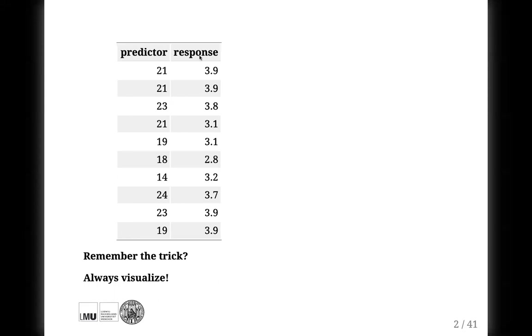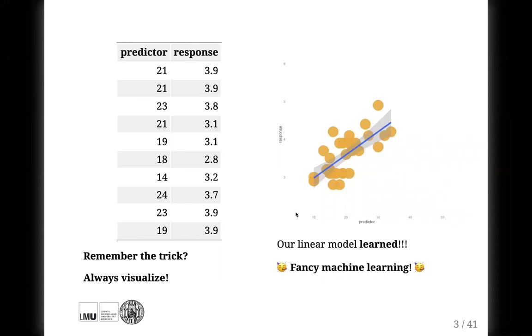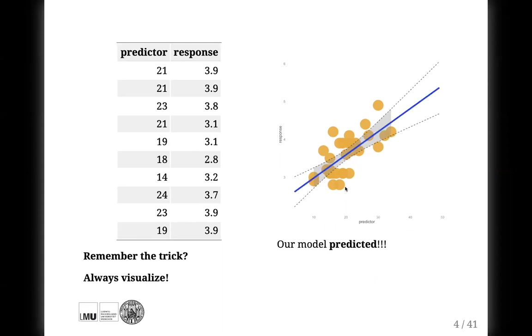We'll start with a repetition of the second lecture. As always, we take a small simple example of data with only two columns, and imagine we want to know the influence of one column on the other. The trick is always to plot the data, and if we plot the data, we may already see some trend. If we see some trend, we can fit a linear regression to it, and even the simplest linear regression is already a machine learning model — it learned from the data and became a bit smarter, so we can ask questions about areas of the plot where we do not have data.